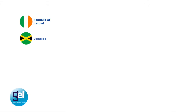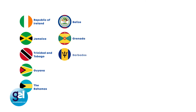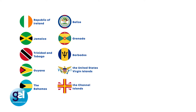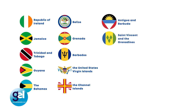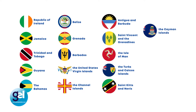Examples of countries and territories where English is the primary language include: the Republic of Ireland, Jamaica, Trinidad and Tobago, Guiana, the Bahamas, Belize, Grenada, Barbados, the United States Virgin Islands, the Channel Islands, Antigua and Barbuda, St. Vincent and the Grenadines, the Isle of Man, the Turks and Caicos Islands, St. Kitts and Nevis, the Cayman Islands, Gibraltar, Anguilla, and the Falkland Islands.